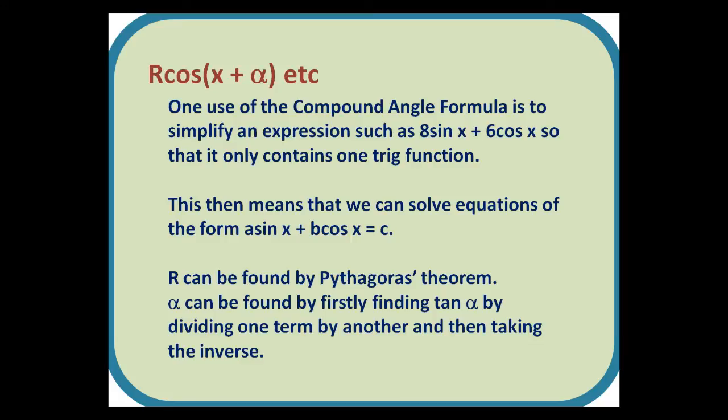R cos(x + α), etc. One use of the compound angle formula is to simplify an expression such as 8sin x + 6cos x so that it only contains one trig function. This then means that we can solve equations of the form a sin x + b cos x = c. R can be found by Pythagoras' theorem, and α can be found by firstly finding tan α by dividing one term by another, and then taking the inverse.